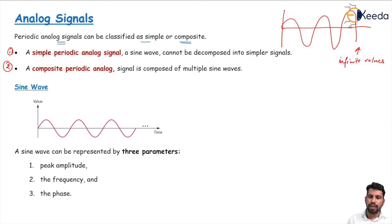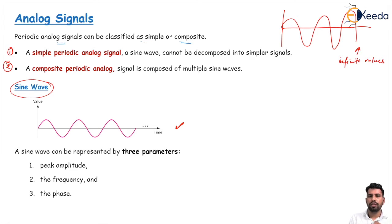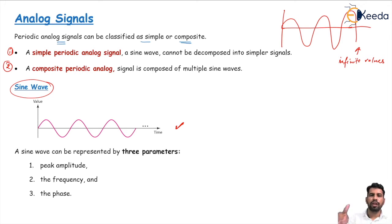Mainly, our analog signals are represented in the form of sine waves. This is a sine wave — the representation of analog periodic signals. When we are speaking, or someone speaks, a wave is generated in the air, and that wave is actually represented as an analog periodic signal.